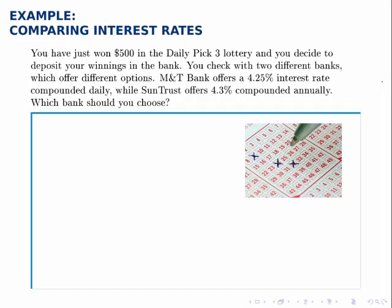And we want to know which bank ends up being better. Now, when we look at it, the second bank, SunTrust, offers a higher interest rate. Slightly higher, not dramatically higher, but a little bit. But M&T's account is compounded more often. So, it's not clear right away which one will be better.